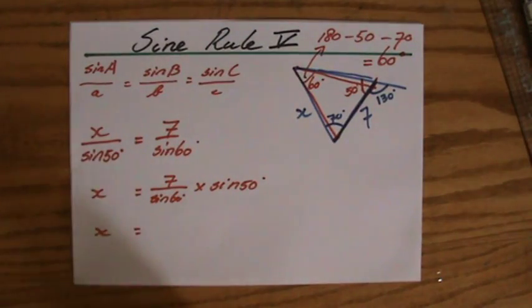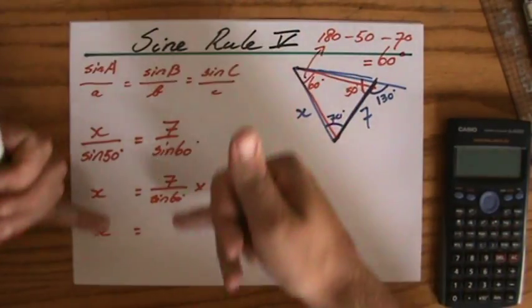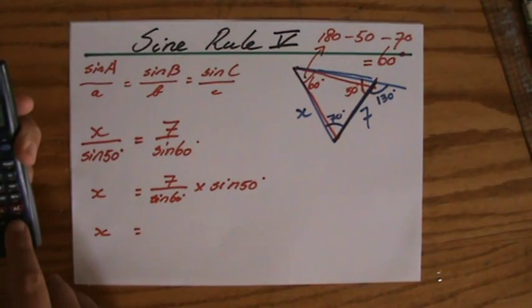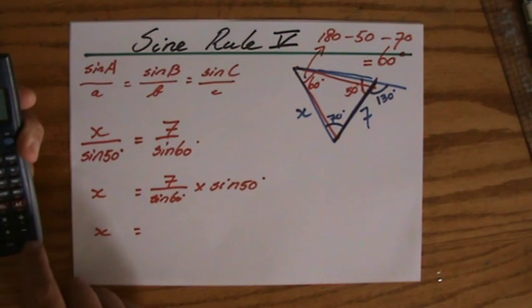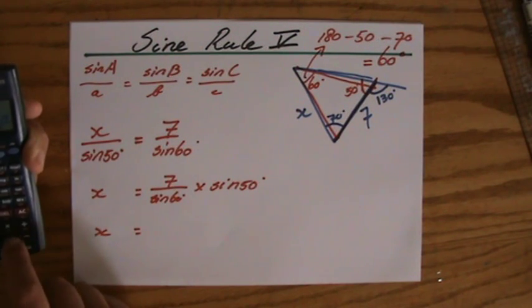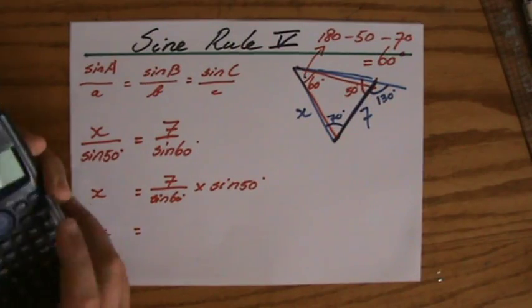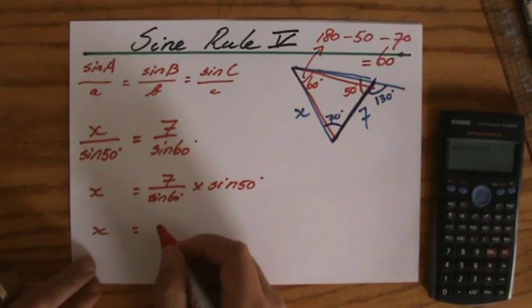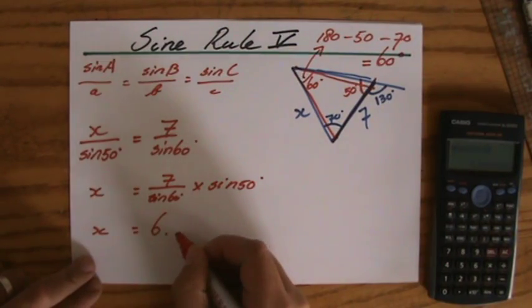Now I grab my calculator. You see, I don't need my calculator at the beginning, only at the end. Because you write down your workings, 7 divided by the sine of 60 degrees equals. There we go. And then we times that all by the sine of 50 degrees.